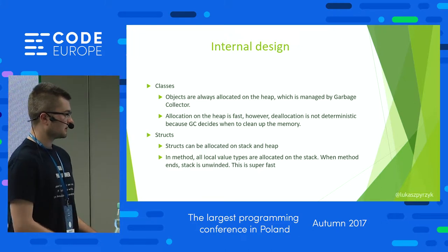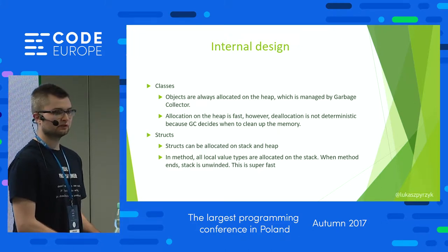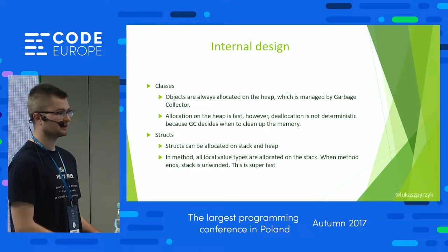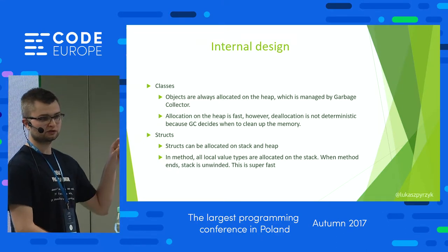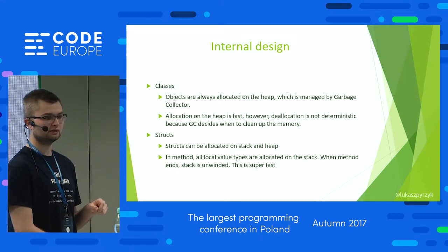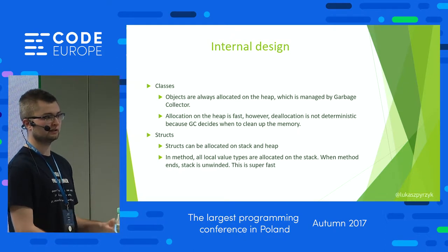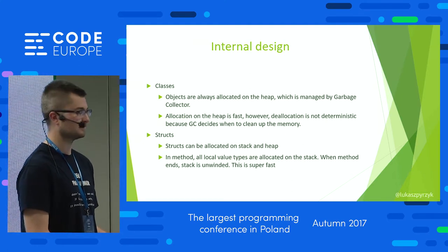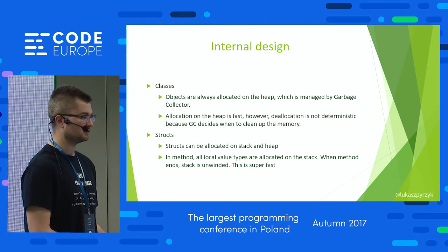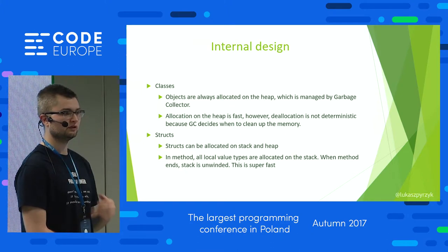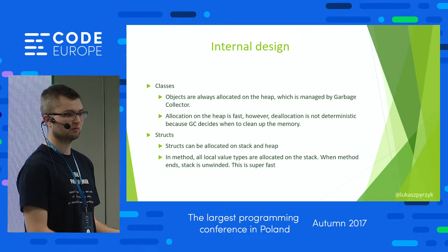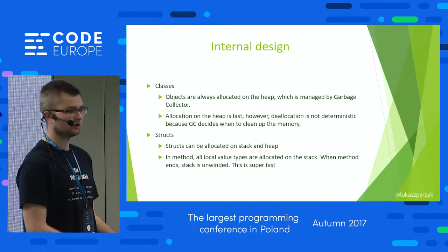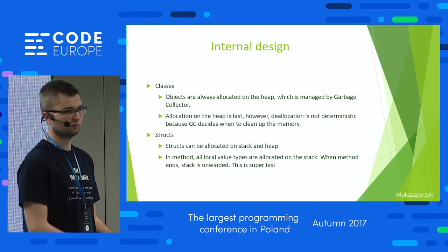Structs are even faster because allocation and deallocation of local value types from the stack is very fast — it's called stack unwinding. If you have a method that allocates a lot of structures as local variables and that method ends, the whole stack is unwound in one period of time, which is very fast. However, you need to remember stack overflow: each thread has some limited memory for the stack. The stack is limited, whereas the heap might not be.